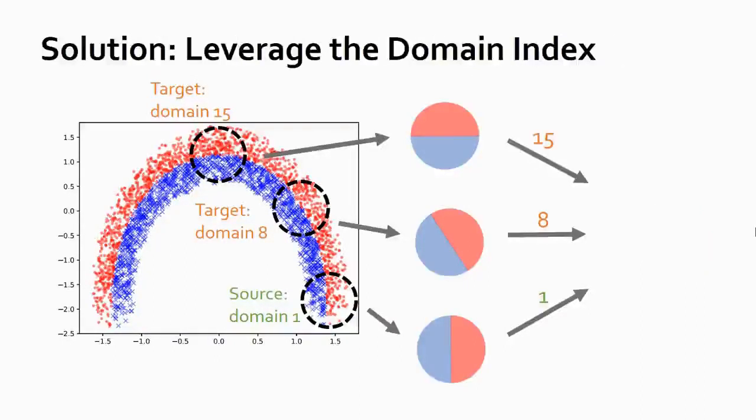To address this problem, our idea is to leverage the domain index. Imagine if our model is given the domain index of the data, it may learn to rotate the data according to the domain index. After transforming the data into a common space, all labels can be separated perfectly.